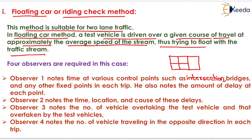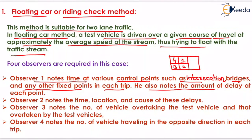In that vehicle, there will be 4 observers sitting — Observer 1, 2, 3, and 4. Observer 1 notes the time at various control points such as intersections, bridges, and any other fixed points in each trip. He also notes the amount of delay at each point.